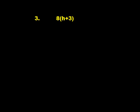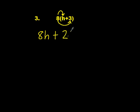Now apply the distributive property to write equivalent expressions for exercises 3 through 8. Pause the video and come back when you are ready. Number 3: take the outside term and multiply it by each term inside. I get 8h, then multiply 8 times 3 to get 24. That is an example of how to use the distributive property.